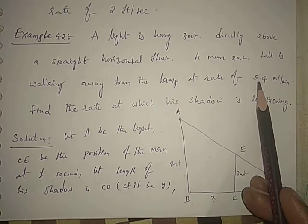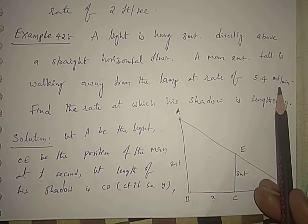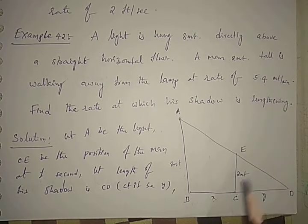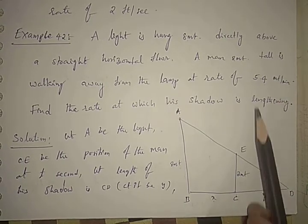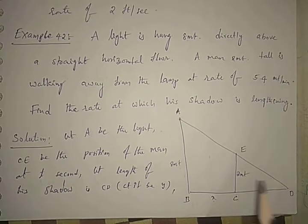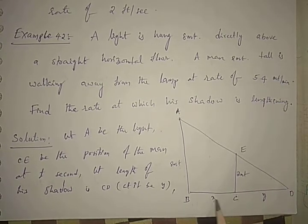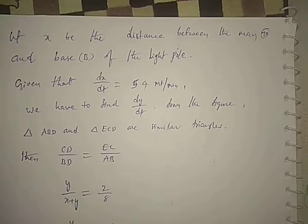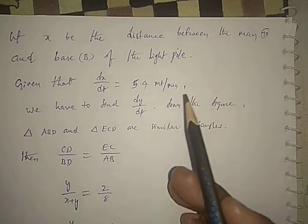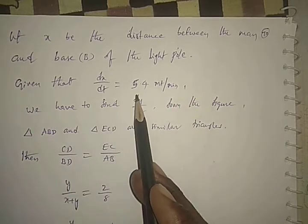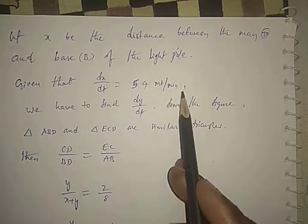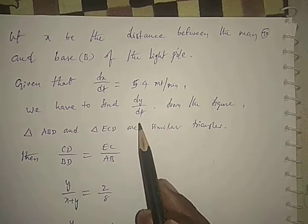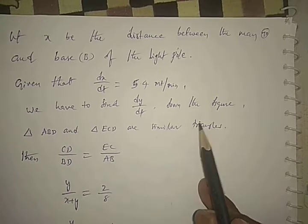In the question, the rate of change in X is given as dx/dt = 5.4 meters per minute. We have to find dy/dt, the rate of change in Y.